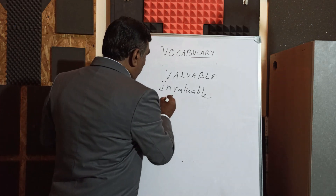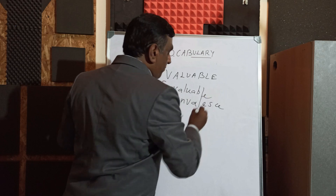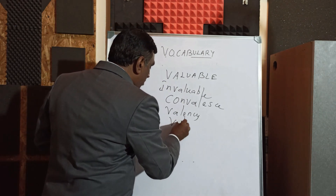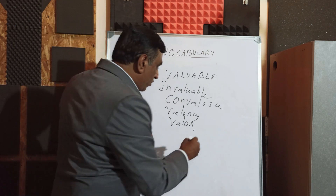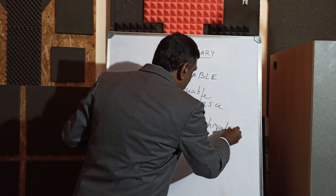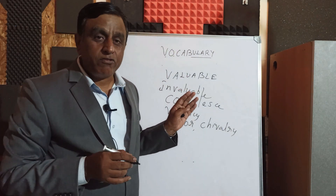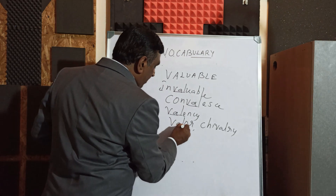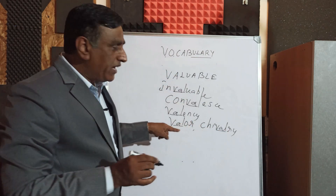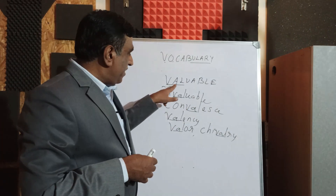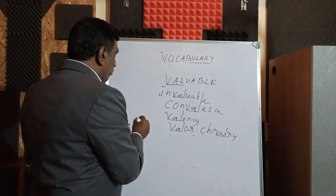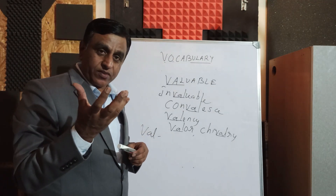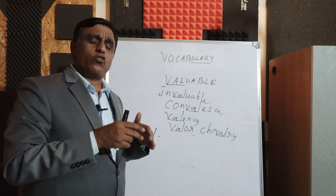Let us have some more words. You have the word 'convalescent', 'valency', 'valor', and one more word related to this — 'chivalry'. What do we notice in these kinds of words? We notice that 'val' is recurring — all these words have 'val'. Dekha aapne — val baar baar aa raha hai. This is the root word 'val', and its meaning is 'value' or 'mulya'. This is the root word, and similarly there are so many root words which I will explain in subsequent sessions.